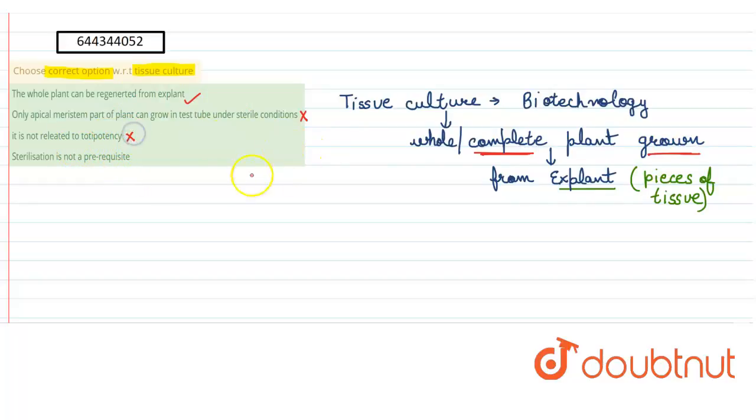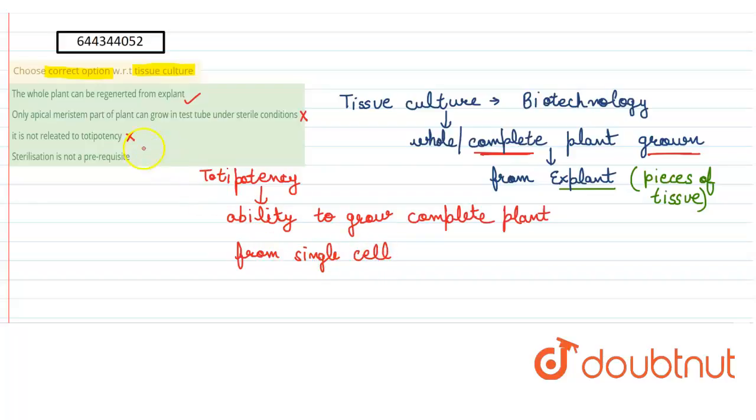Why? Because what is totipotency? Totipotency is the ability of a plant to grow complete plant from single cell, the ability to grow complete plant from single cell. But this feature can be seen in case of tissue culture; it is required.